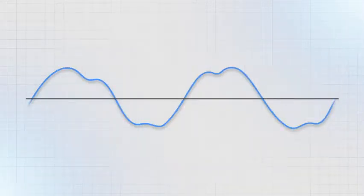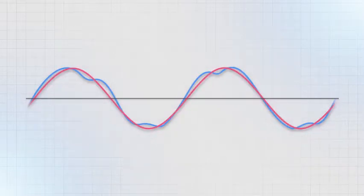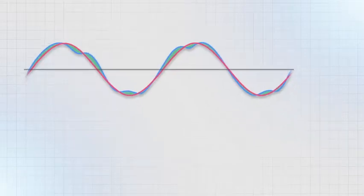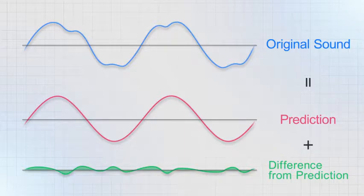MPEG-4 ALS first analyzes the waveform sequence and generates its prediction. Then, ALS reads the small difference between the waveform and the prediction. The audio data can be perfectly reproduced from the predicted data and the difference data, comprising less data volume than the original audio. The data volume can be reduced to about 30% when the audio is easy to predict.